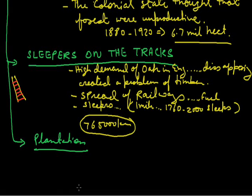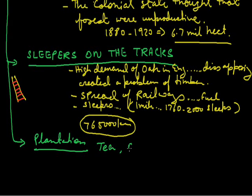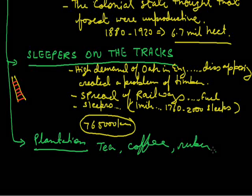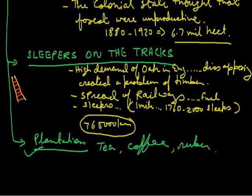Plantations also gave a lot of raw material to the British for their industries. Large areas of natural forest were cleared to make plantations — specially tea in the eastern part of India, coffee, and in the south there is rubber plantation. They established rubber plantations to meet Europe's growing need for these commodities. The colonial government took over the forests and gave vast areas to European planters — the plantation owners — at a very cheap rate. This is how these areas were enclosed, the whole forest was cleared, and they grew tea, coffee, rubber, etc. Because of these plantation reasons also, a large part of forests were cut down.